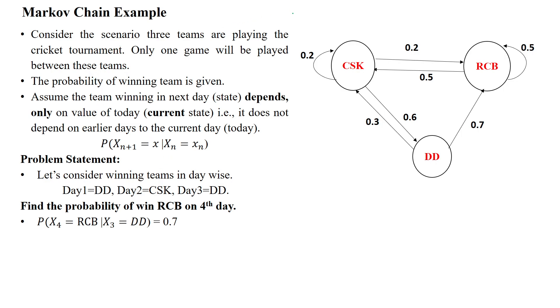Here the three teams are playing the cricket tournament. Only one game will be played between these teams. The probability of winning team is given as the team winning in the next day depends only on the value of today, that means current state. The next state depends only on the current state. It does not depend on earlier days to the current game.